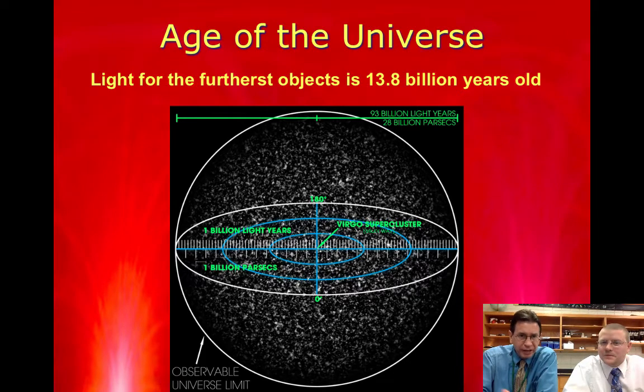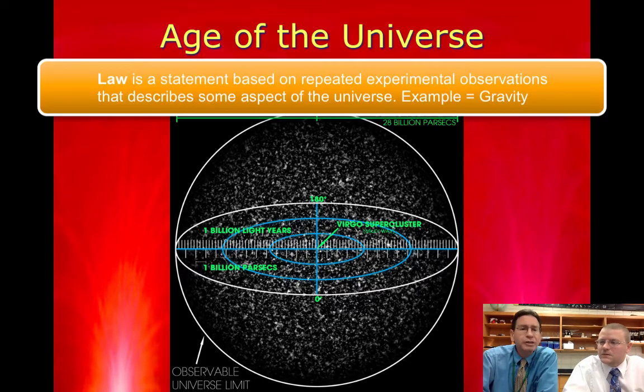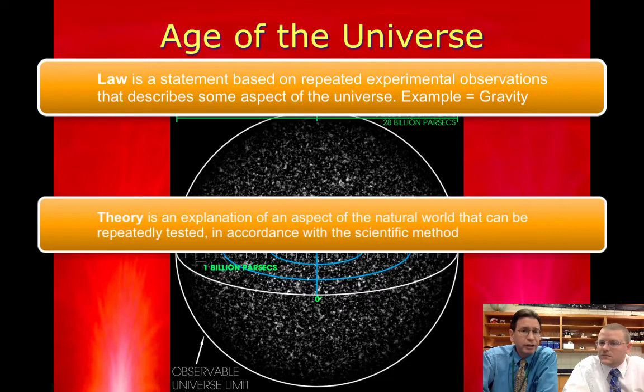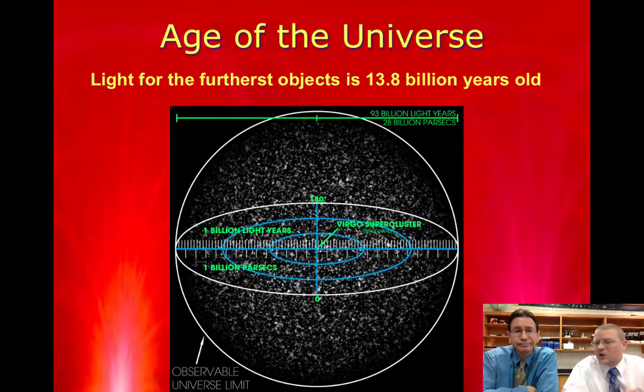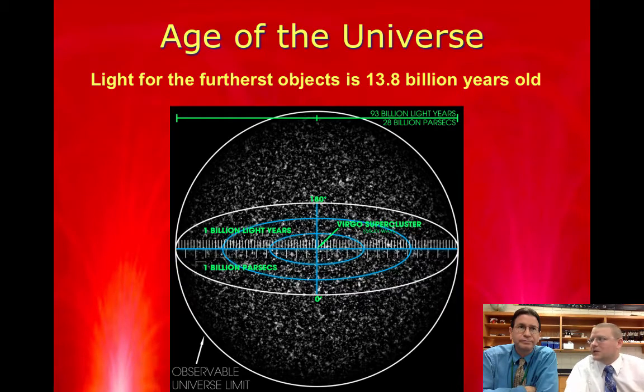One of the things that you need to understand is the difference between a theory and a law. A law is something that's been proven. A theory is something that's backed up by a lot of evidence, but it's not necessarily proven to be true. It's a good hypothesis with lots and lots of evidence, but we're not sure if this applies everywhere. The law of gravity applies everywhere in the universe.